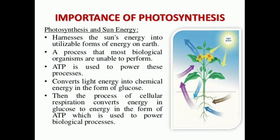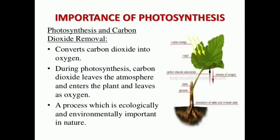Photosynthesis is very important for all the organisms present on this earth because the sun's energy is converted into utilizable forms of energy during this process. Only green plants have the capability to convert light energy into chemical energy — specifically in the form of glucose. This glucose is then utilized by all organisms to produce ATP, which gives organisms energy.